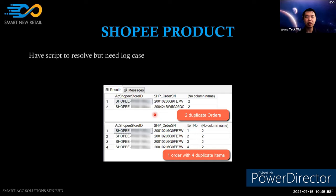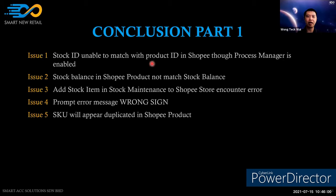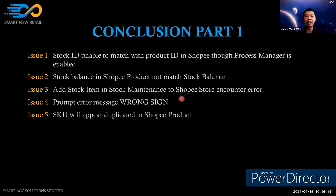Summary for Part 1 — Shopee Product: the issues covered are stock ID unable to match product ID in Shopee though the process manager is enabled; stock balance not matching; error when adding stock item; the 'wrong sign' error prompt; and SKU appearing duplicated.